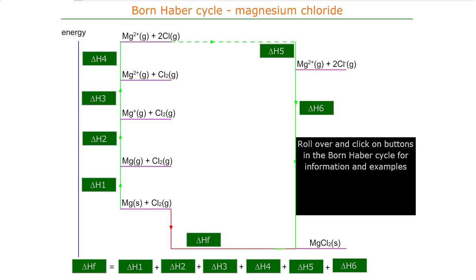All right, here we have the Born-Haber cycle for magnesium chloride. You can see that at the bottom we have magnesium chloride plus—sorry, magnesium solid plus chlorine gas.